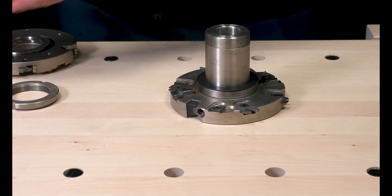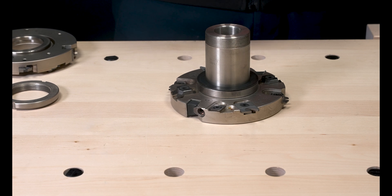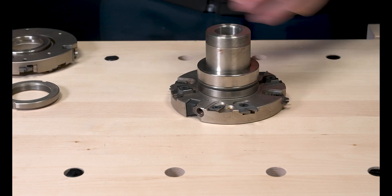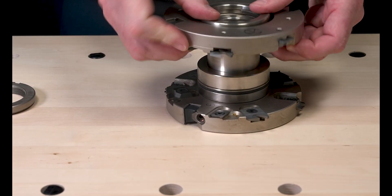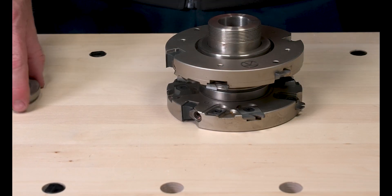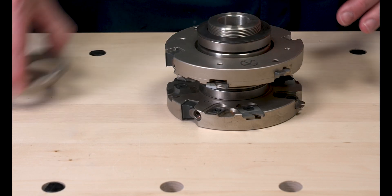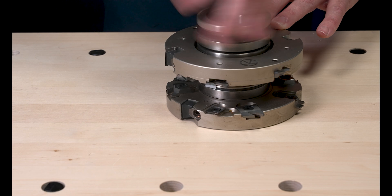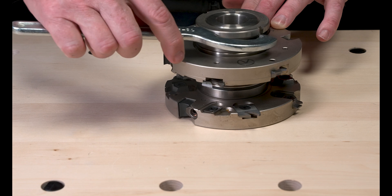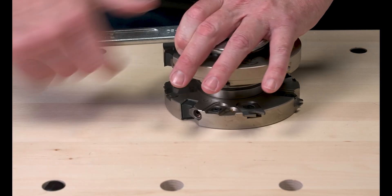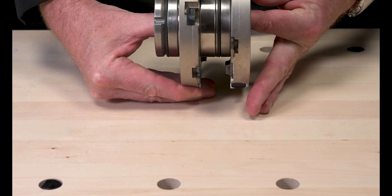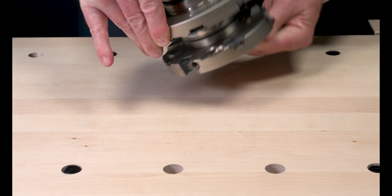And then put in the 18mm spacer, place the top element, put on the top nut. And here we have set up to do the 57mm without the R10 spiral.